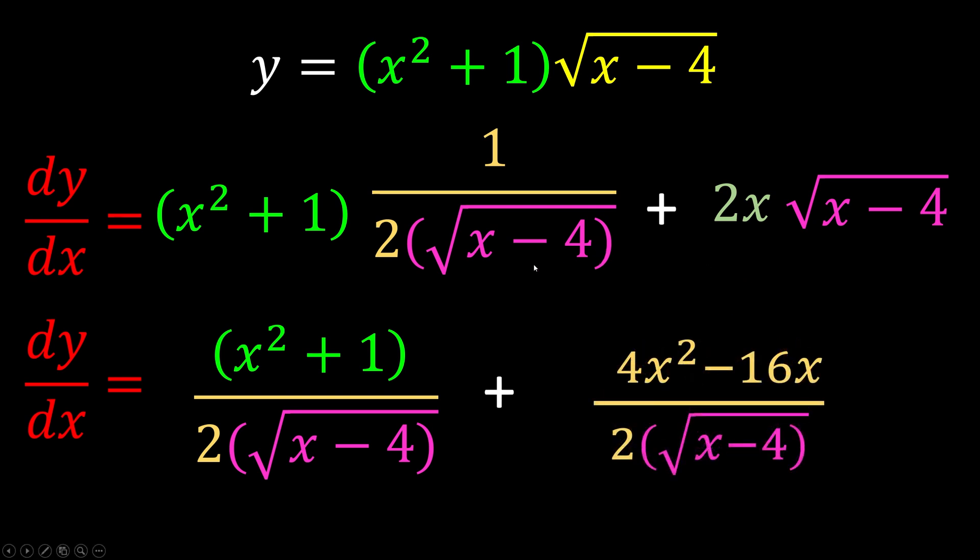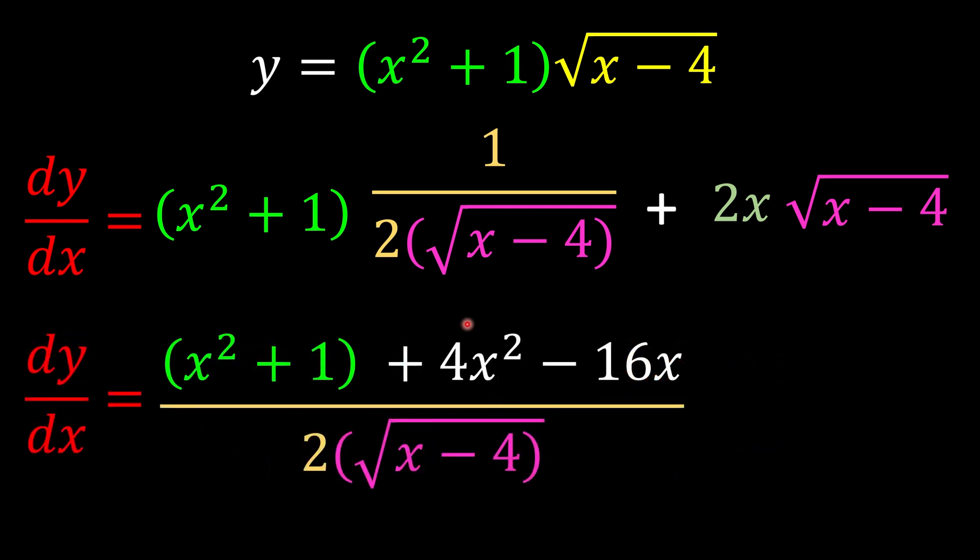After we are done with our expansions, we have both the same denominators. Now we can just combine together. Once we combine together, we see that we have like terms here: x² + 4x² gives us 5x².